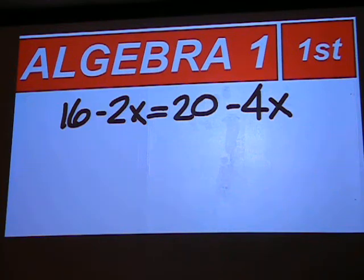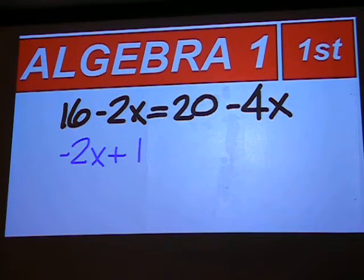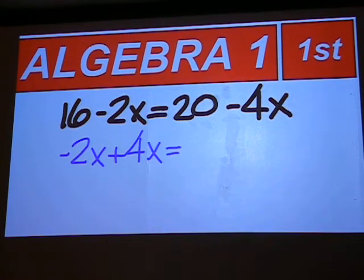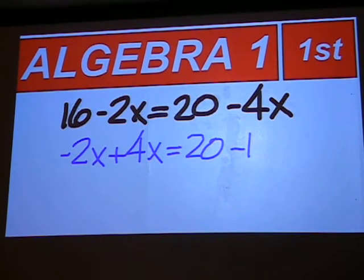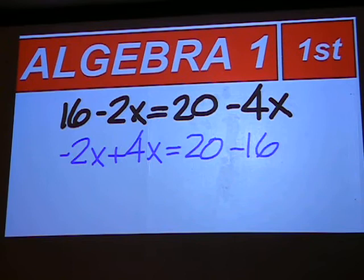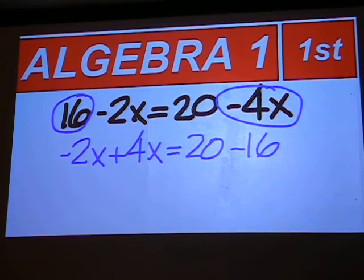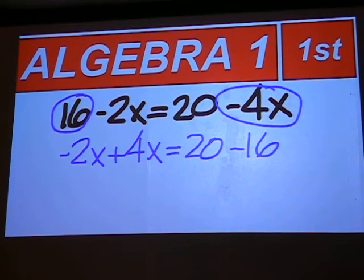Negative 2x plus 4x equals 20 minus 16. This comes from moving this over to the left making it plus 4x, and this over to the right making it minus 16.